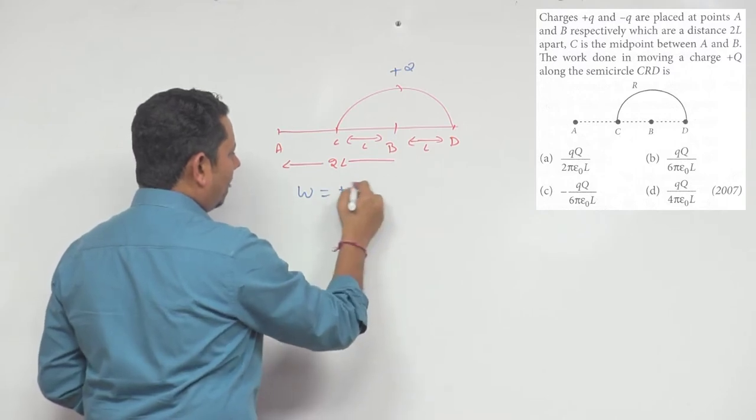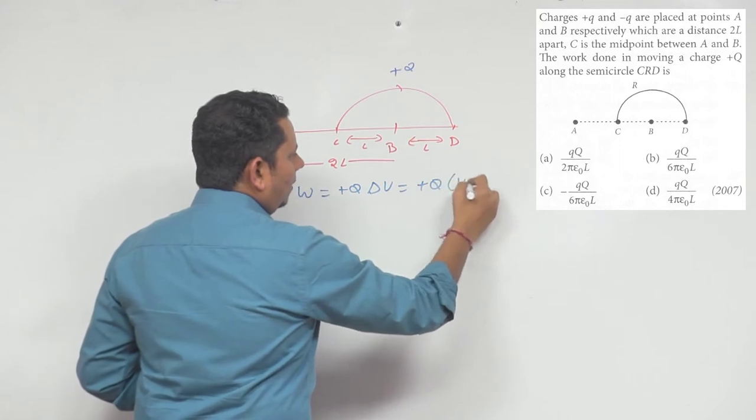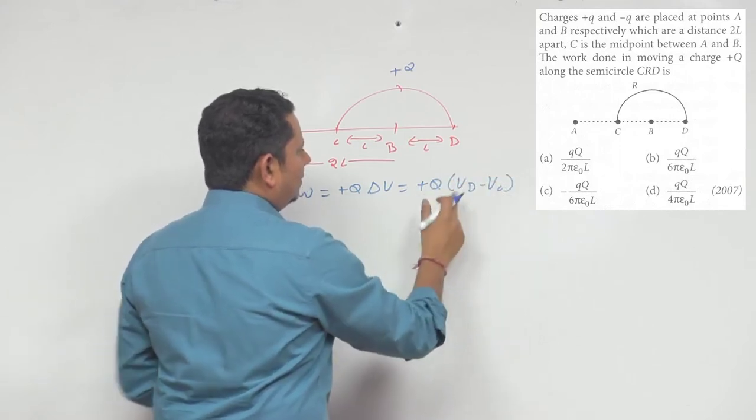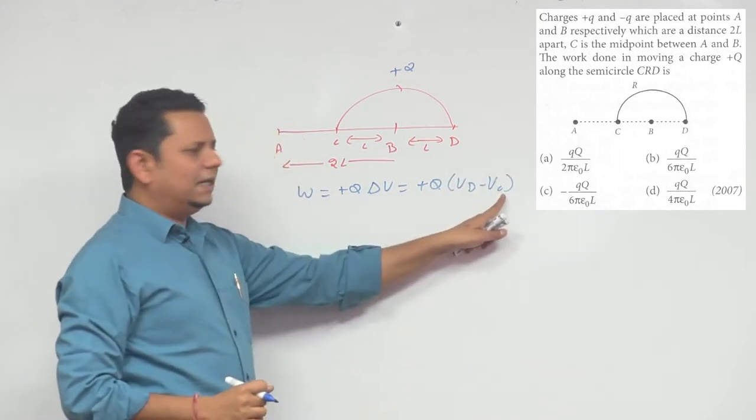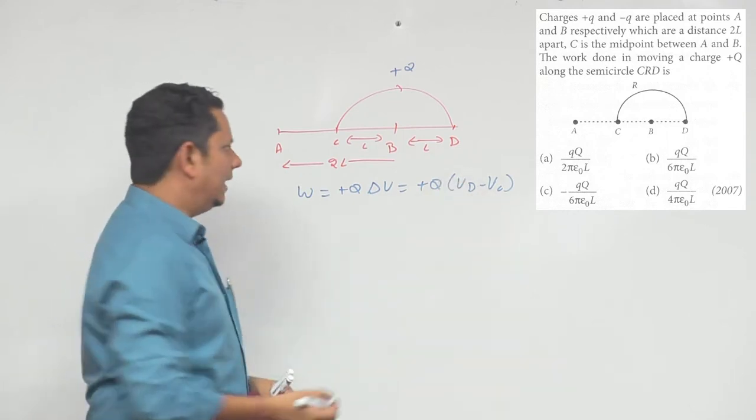So the work done here, you will write as +Q, the charge multiplied by delta V, that is +Q multiplied by VD minus VC. Which is final potential minus initial potential. Now we just have to find the values of VD and VC.